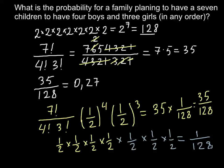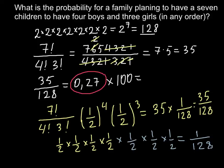The final answer is 0.27, but note that this is not a percentage. If you need to express it as a percentage, you have to multiply by 100, giving 27 percent — that is the probability of having 4 boys and 3 girls.